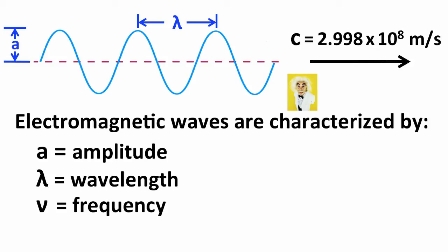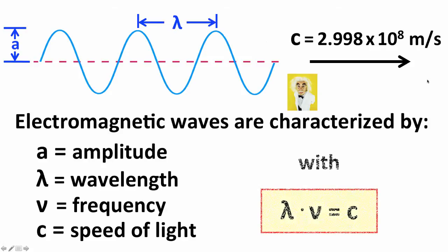They also have a speed at which they travel. In vacuum, the speed of light is 2.998 times 10 to the eighth meters per second, symbolized by C. The relationship between wavelength, frequency, and speed is: wavelength times frequency equals the speed of light. This means wavelength and frequency are inversely related — if wavelength is larger, frequency is smaller, and if wavelength is smaller, frequency is larger, to maintain a constant product equal to the speed of light.